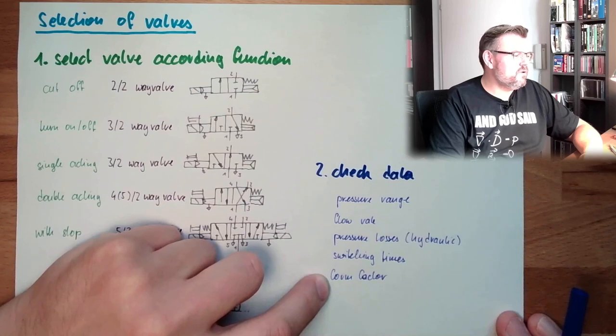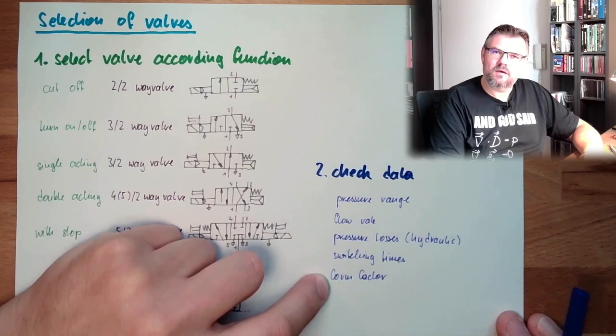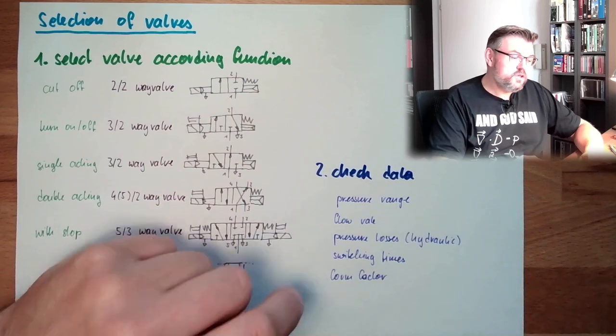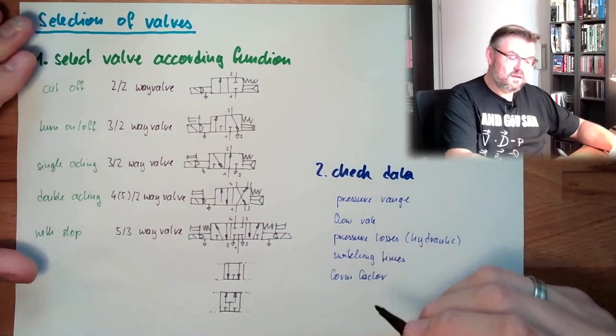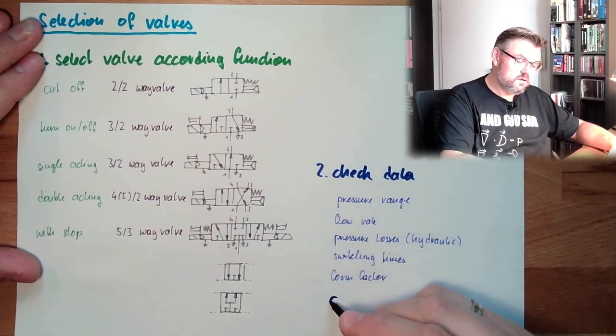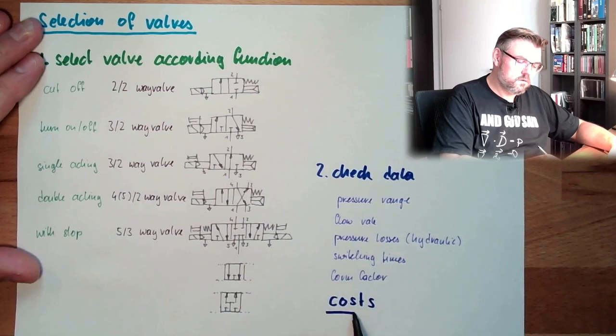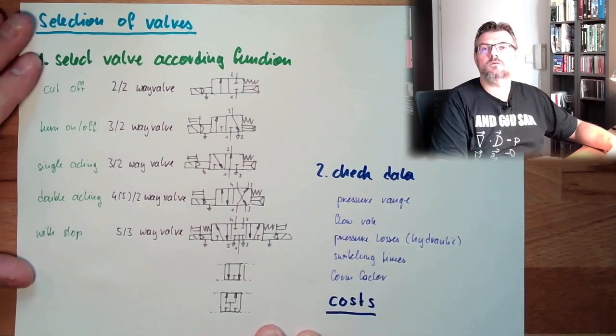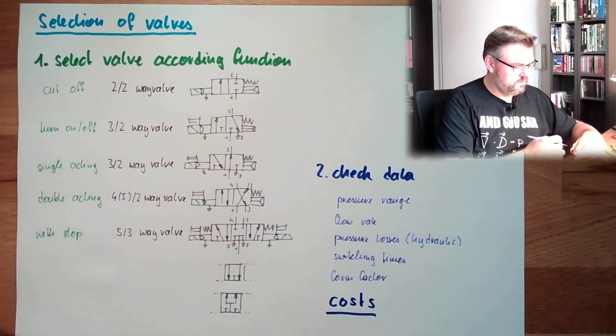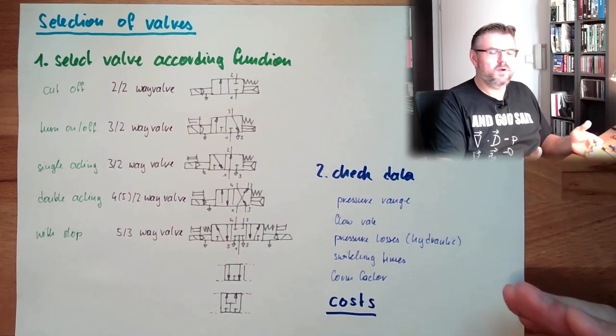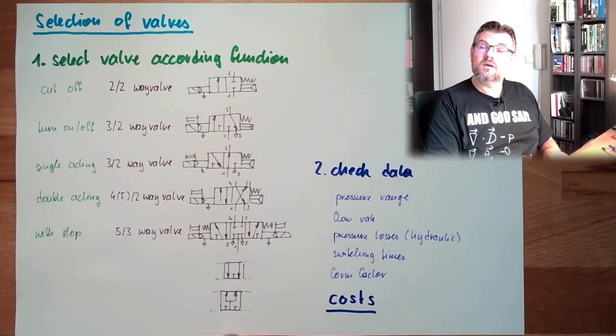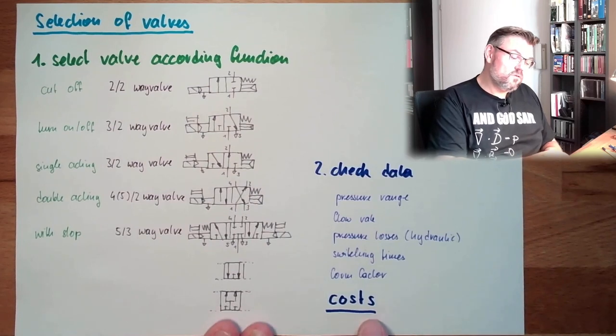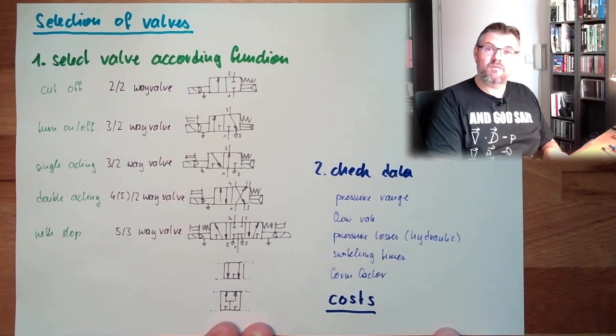Form factor is more of an issue. Usually people don't really care how things look like. The thing which is really then the selection criteria is costs, because you for sure end up in a situation where you have several choices and then you need to determine the costs.